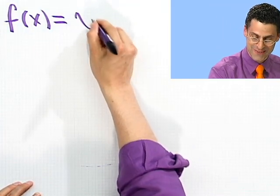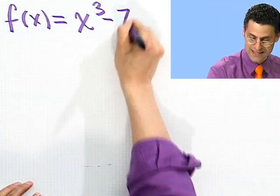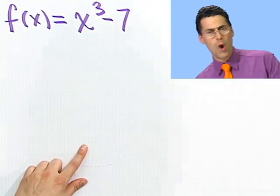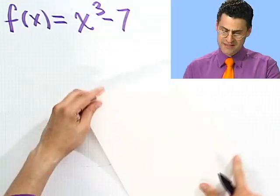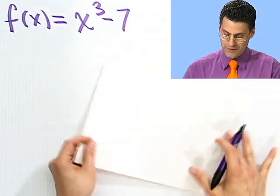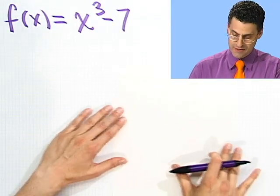All right, so f(x) equals, let's try this one, x^3 - 7. Well, first, let's just see if we have any hope of having this thing have an inverse or not. Let me sketch the graph of this, because it's also a good little refresher as to what that may look like.